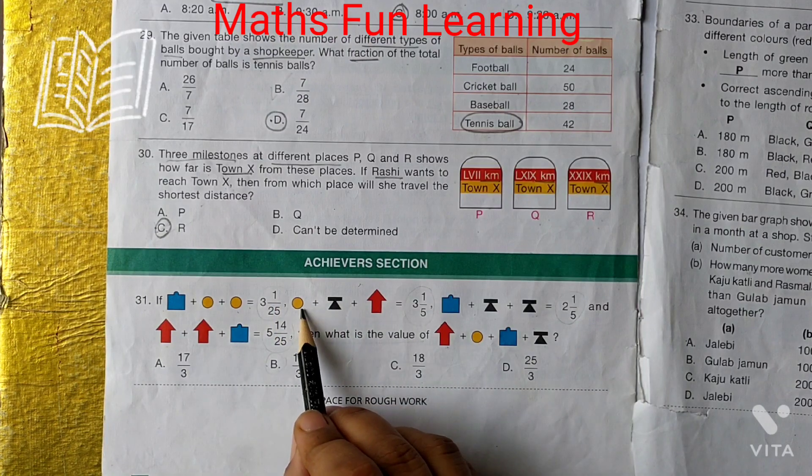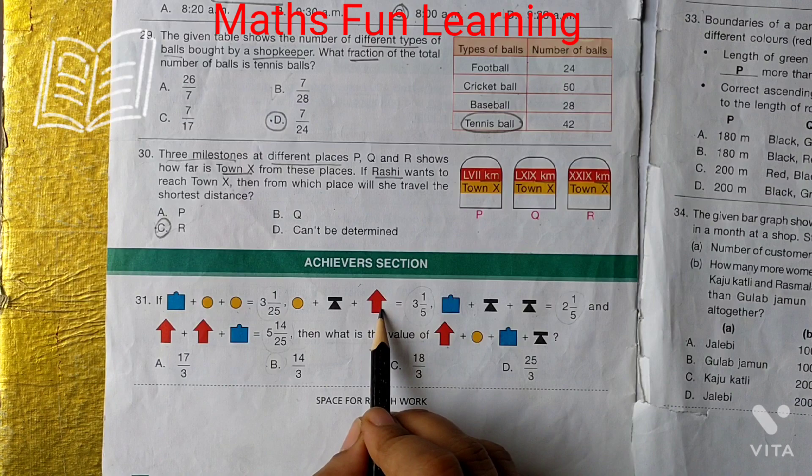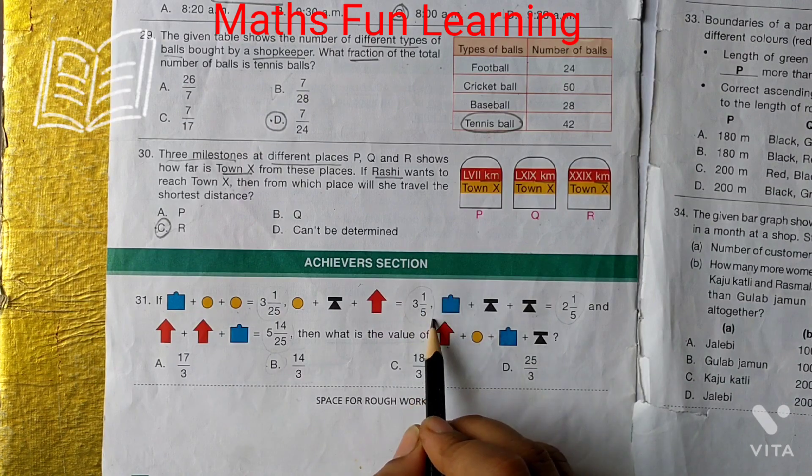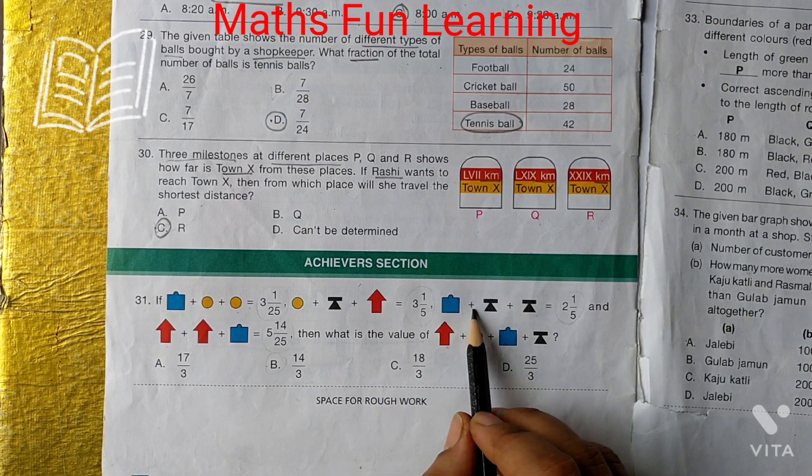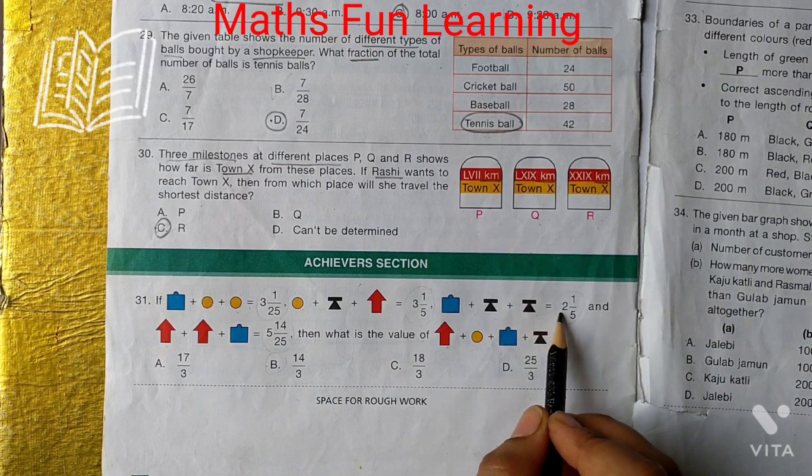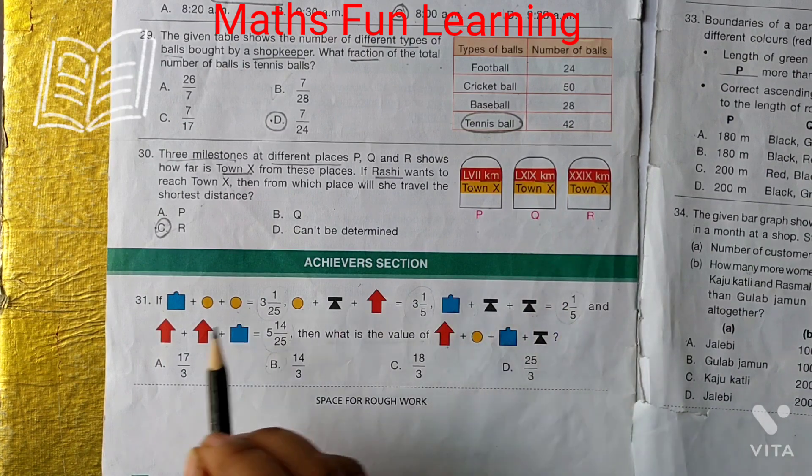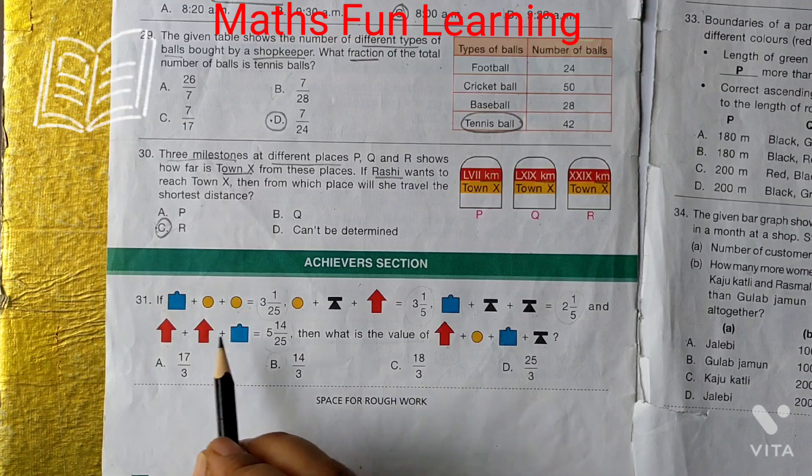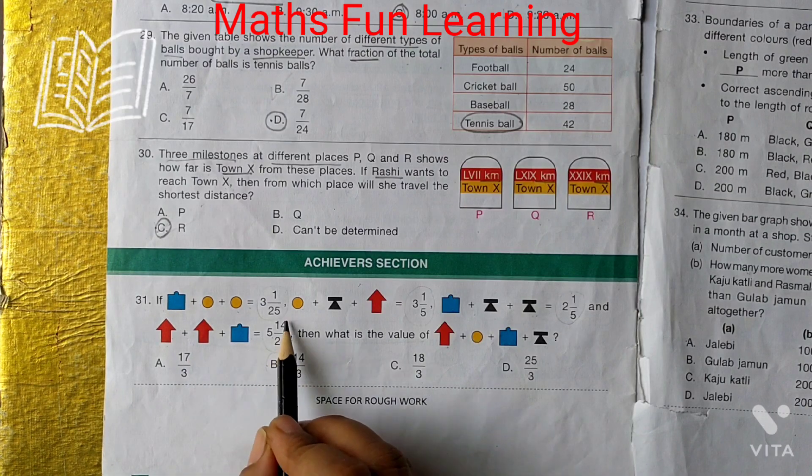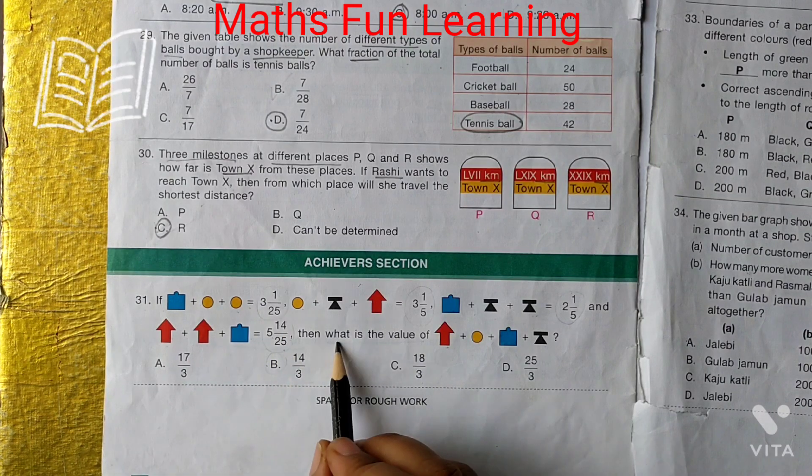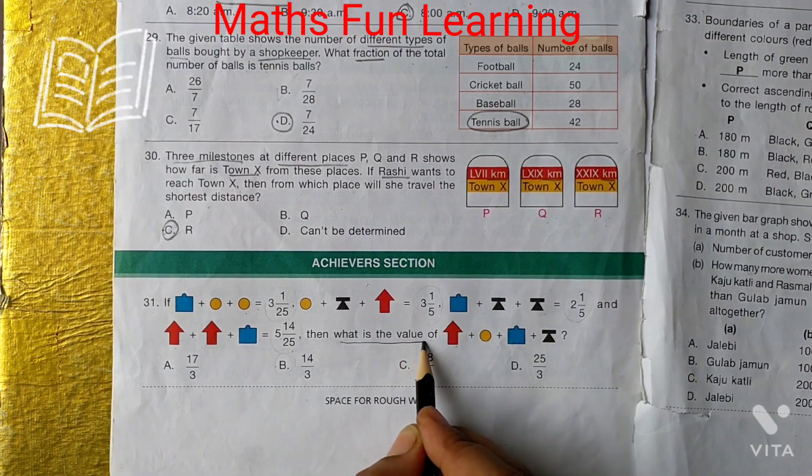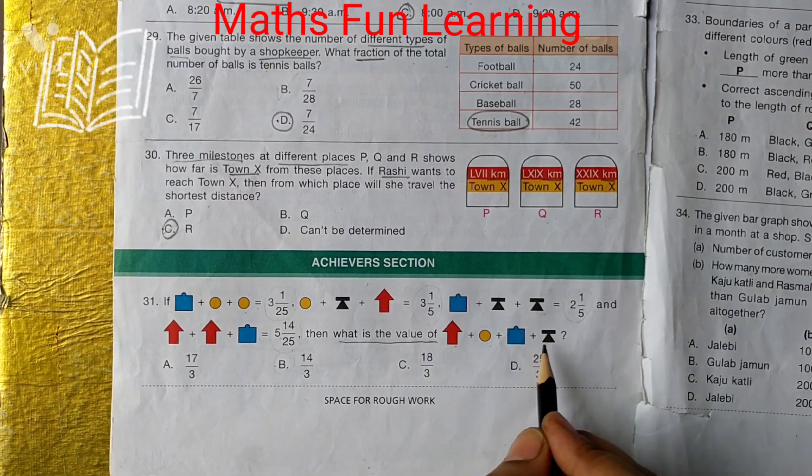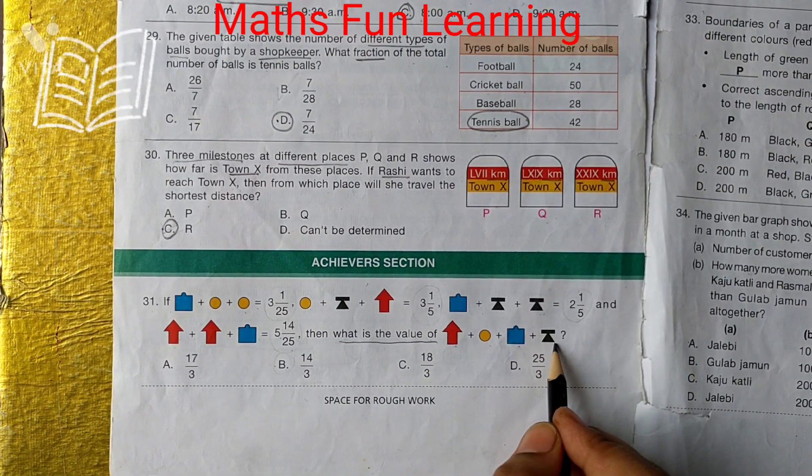Second is yellow plus black plus red is equal to 3 and 1 by 5. Third is blue plus black plus black is equal to 2 and 1 by 5. And red plus red plus blue is equal to 5 and 14 by 25. Then, what is the value of red plus yellow plus blue plus black?